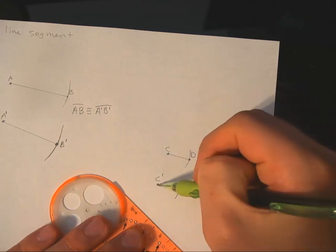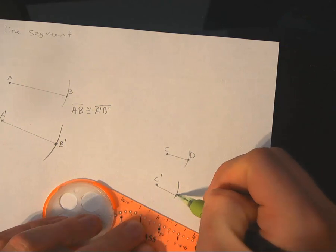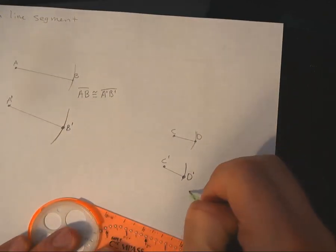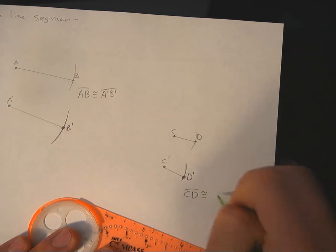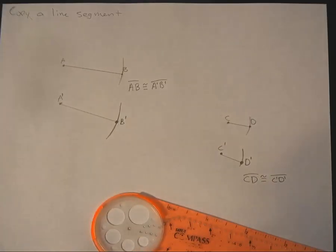And then we're going to draw that line from C prime out to the edge of that circle. Put a point where they intersect and we're going to call this one D prime. What we have here is that the line segment CD is congruent to the line segment C prime D prime. And that's how we copy line segments.